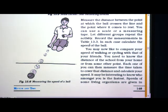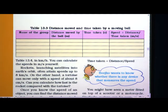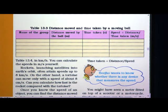Let different groups repeat the activity. Not only once — you have to perform this activity with your other friends too. Make your friends also perform this activity and record all the measurements in table 13.3. The columns in table 13.3 are: name of the group, distance moved by the ball, time taken in seconds, distance in meters, and speed equals distance divided by time taken, which is in meter per second.